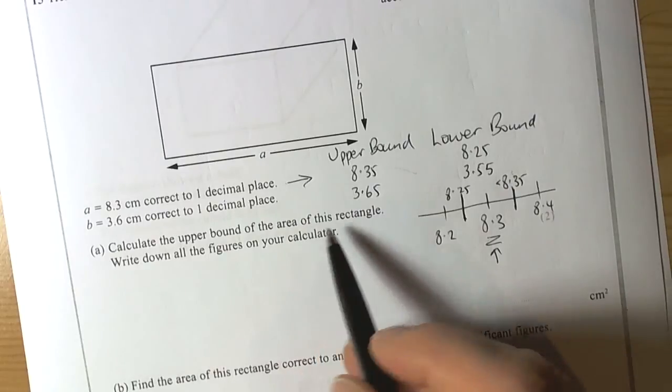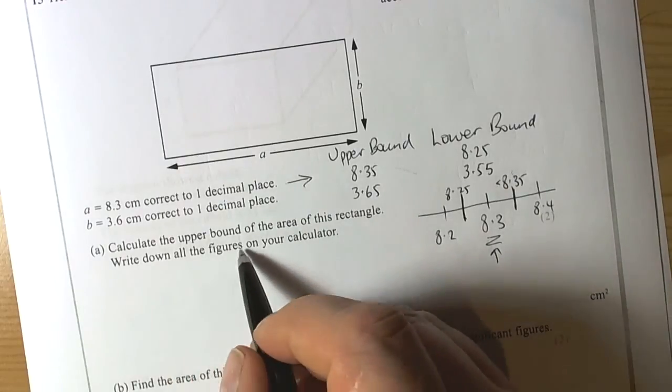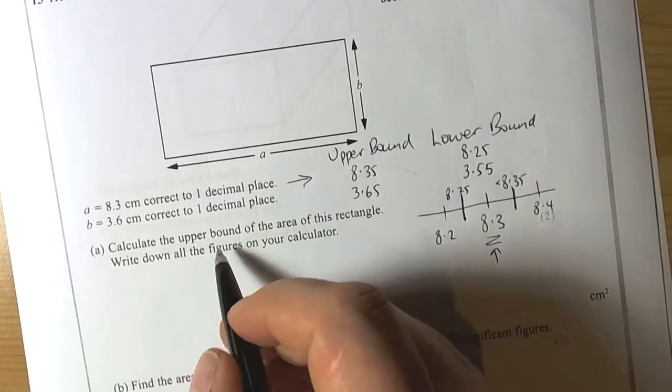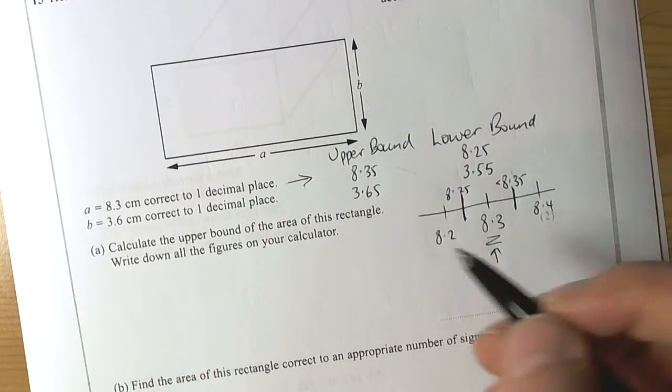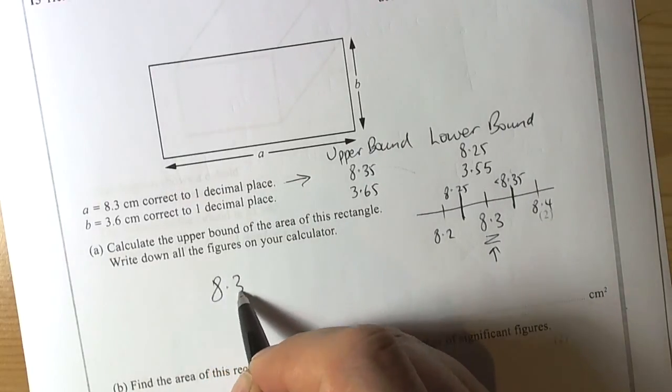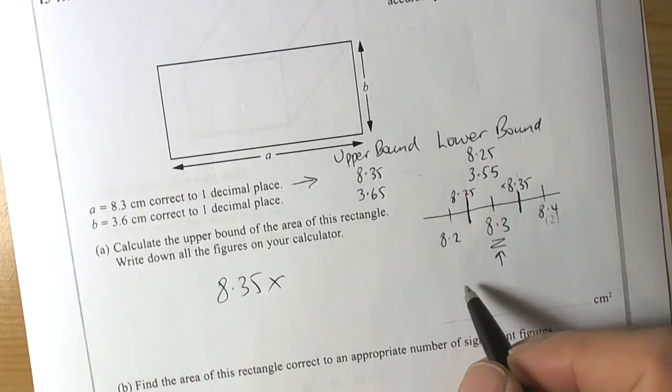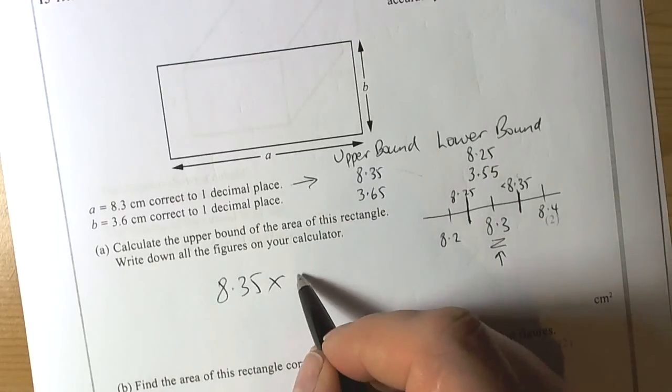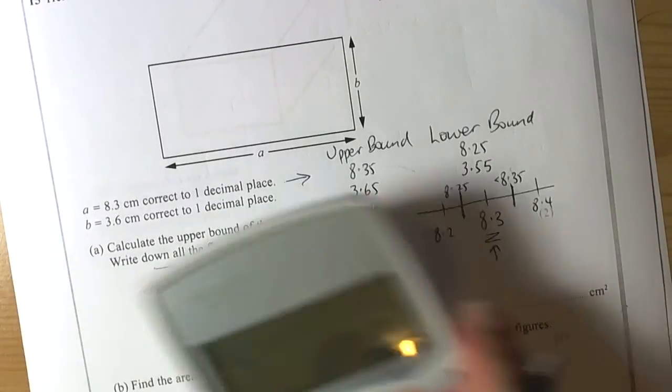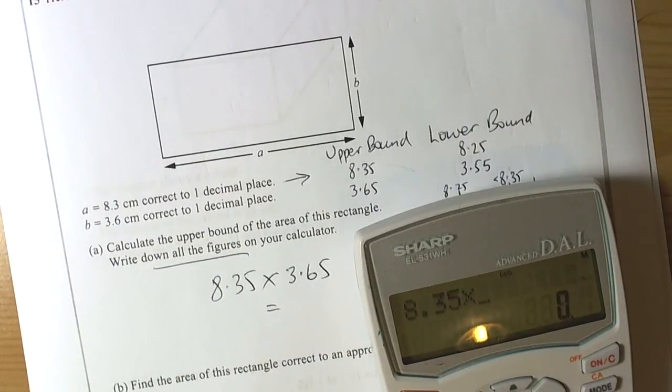It says calculate the upper bound of the area. So we recognise the area is the length of A times the width of B. We want the upper bound, so in other words we want the largest possible value. So that means we need to use the upper bound of A times by the upper bound of B. And the question says write down all the figures. So 8.35 times 3.65 equals...